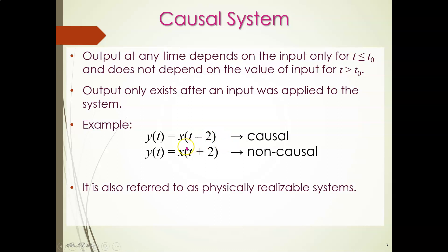A causal system is still a memory system because it depends on past values of the input, but it does not depend on future values. For example, y(t) = x(t−2): this involves only the positive side of the origin, so this system is causal. On the other hand, y(t) = x(t+2) involves signals on the negative side of the origin — meaning future signals that have not passed through the origin — so this is a non-causal system.